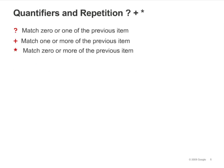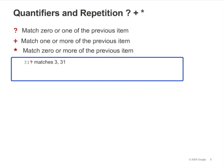Now let's talk about using quantifiers to indicate repetition. The question mark requires either 0 or 1 of the preceding character. In the expression "31?", the character preceding the question mark is a 1, so both "3" and "31" would match. The plus sign requires at least 1 of the preceding character, so "31+" wouldn't match just a "3" — it would match "31", "311", and so on. The asterisk, or star, requires 0 or more of the preceding character. In the expression "31*", it would match "3", "31", "311", and so forth.